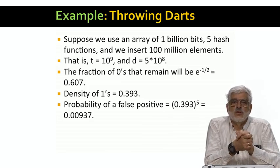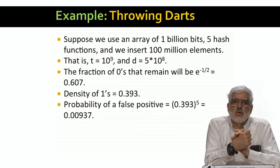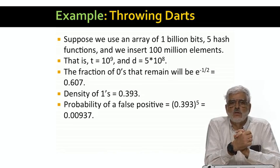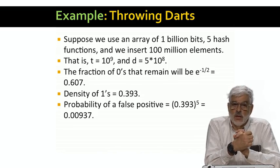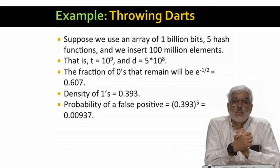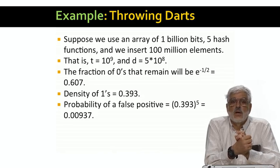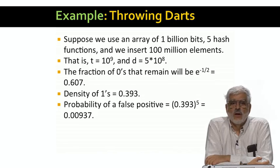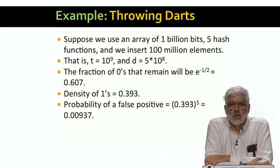From this information we can calculate the probability of a false positive. For element y to be a false positive, all five hash functions must take it to bits that are one. The probability of one hash function doing so is 0.393, and the probability that all five do is that raised to the fifth power, or 0.00937. That's a little less than 1%.